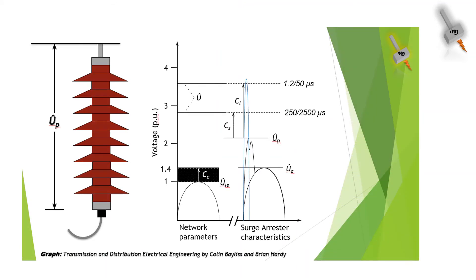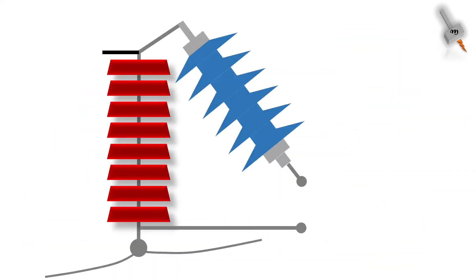We already know how the non-gapped lightning arrester works from my previous videos. Now let's understand how the externally gapped lightning arrester works.